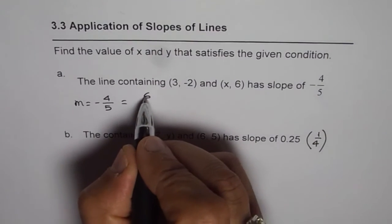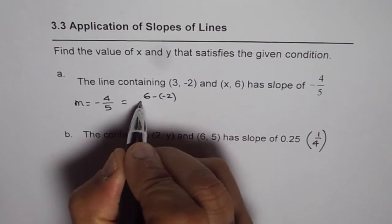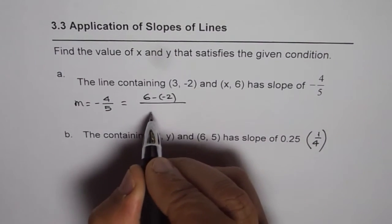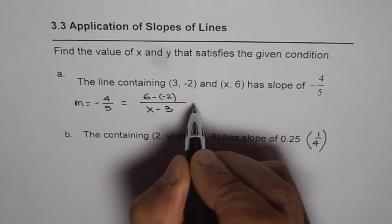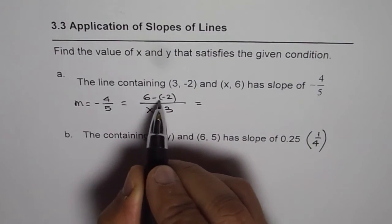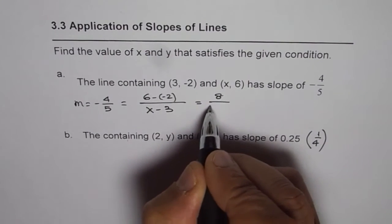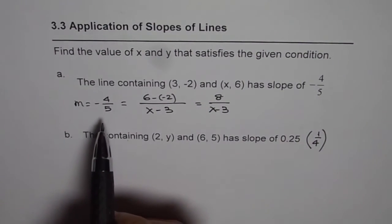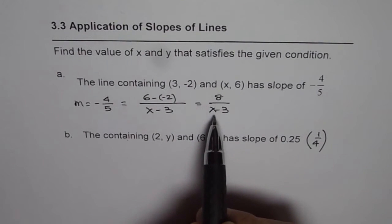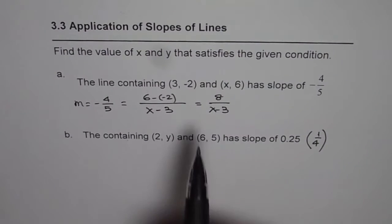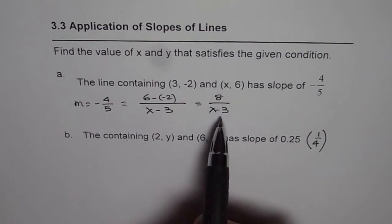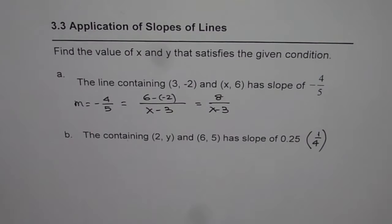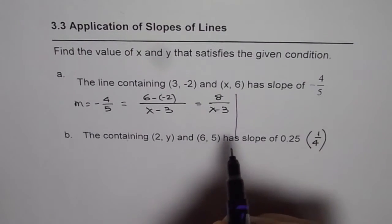So let us apply the slope formula and write it down. It is (6 - (-2)) divided by (x - 3). So that comes to 6 minus minus 2 is 8, so we have 8/(x-3). Now we have an equation which is -4/5 = 8/(x-3). We can always solve this equation and find the value of x. So let us solve this equation.